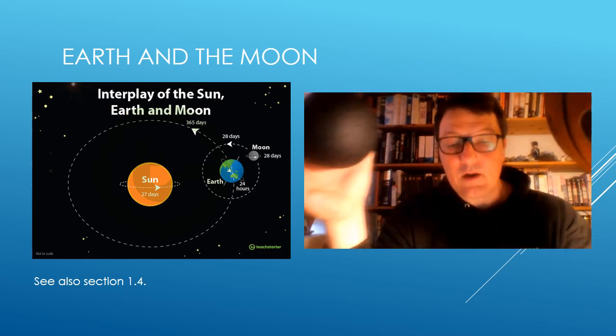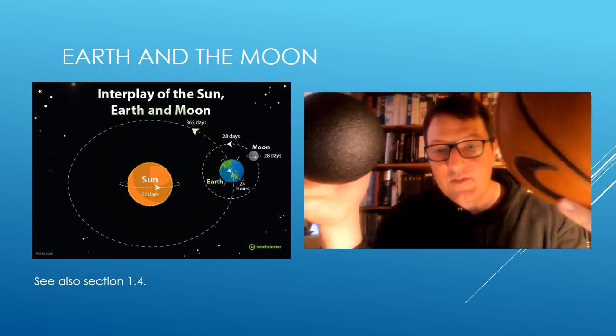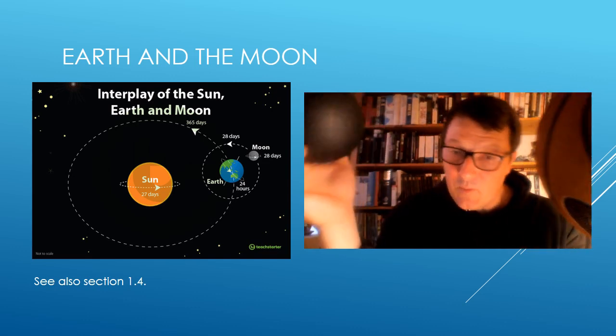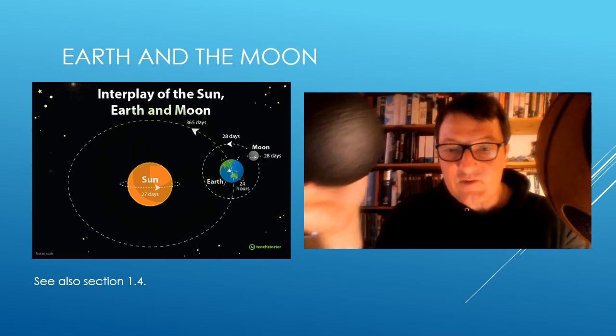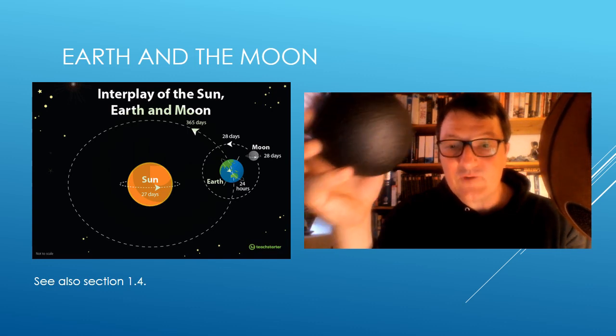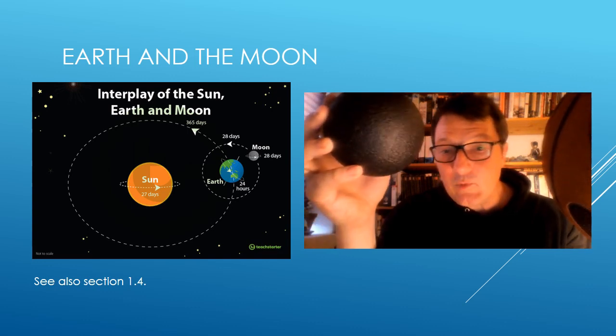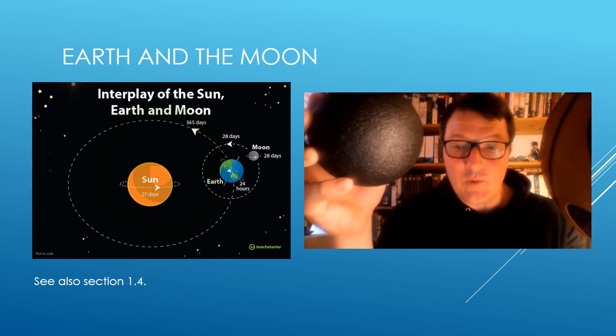As the Moon is quite closer to the Earth than the Sun is, although it has a much smaller mass than the Sun, its gravitational pull is still big enough to have a huge influence on tides. We'll talk about that in section 1.4.